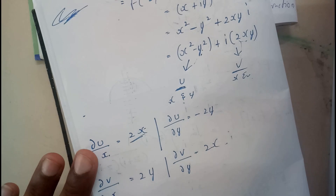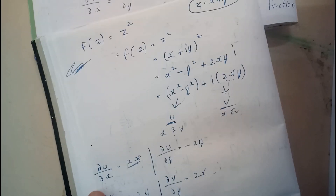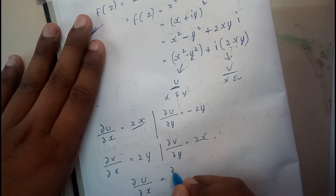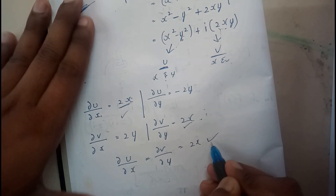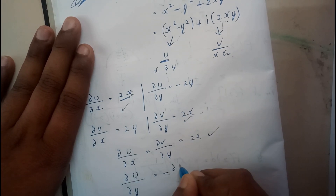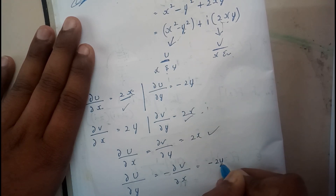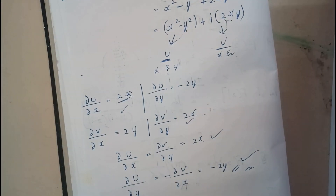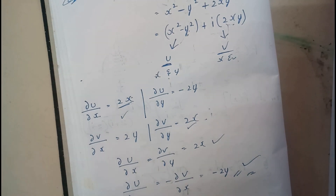These are all continuous functions. From the Cauchy's Riemann equations, we check: ∂u/∂x = ∂v/∂y — both are equal to 2x, so this condition is satisfied. Next, ∂u/∂y = −∂v/∂x — both equal −2y, so this is also true. This follows Cauchy's Riemann equations, hence f(z) = z² is an analytic function.